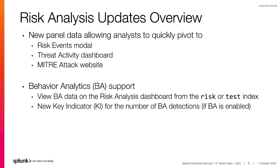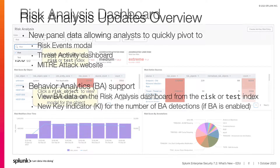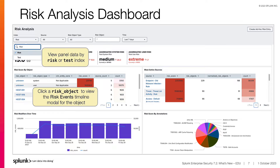Our first topic covers the updates made to the Risk Analysis Dashboard. The Risk Analysis Dashboard has been updated so users can quickly pivot to the Risk Events Modal, the Threat Activity Dashboard, and the MITRE ATT&CK website. For ES environments with Behavior Analytics, or BA, enabled, there is an index drop-down for choosing the Risk or Test Index, and a new Key Indicator for BA Detections.